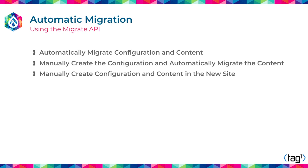Think about what the Migrate API can do for you in terms of automation: you can automate migrating both configuration and content, or you can only migrate the content automatically after setting up the configuration yourself. I have seen organizations that started the upgrade to Drupal 10 many years ago — they had time to think about the whole architecture, create the configuration manually, and only migrate the content. Now, with Drupal 7 end of life so close, organizations are rushing and trying to copy as much as possible — both configuration and content — to be on a supported version.